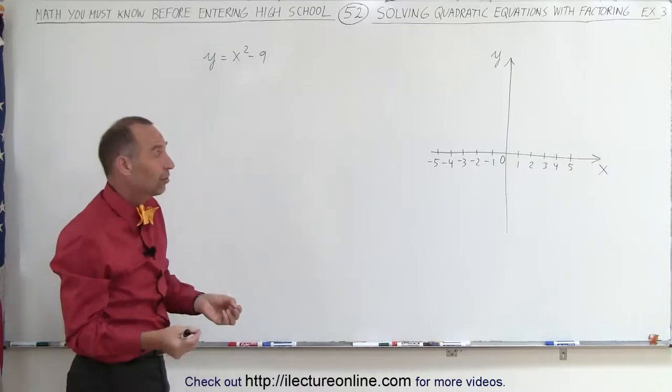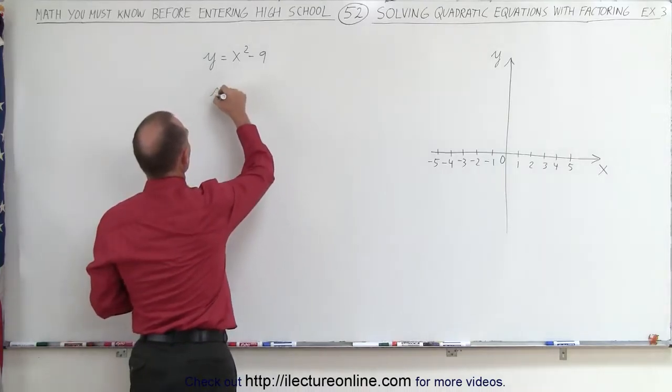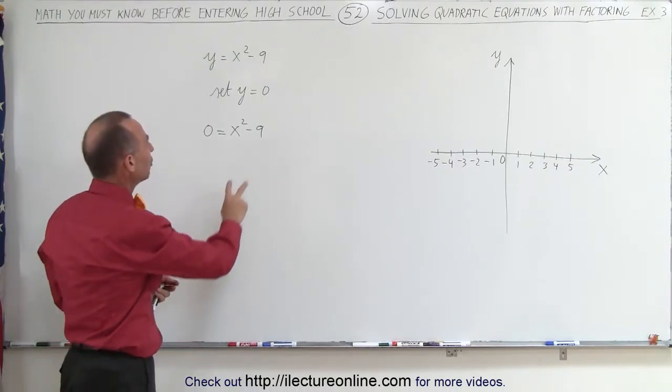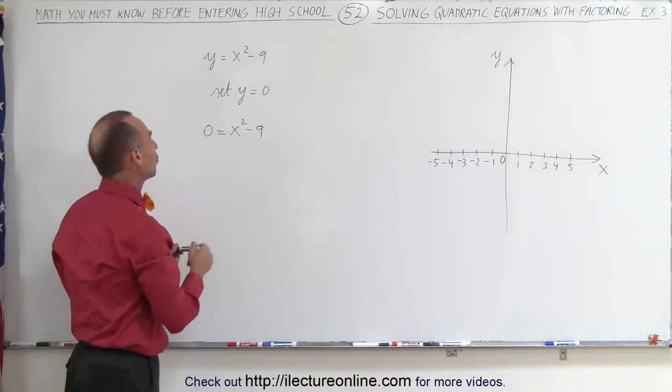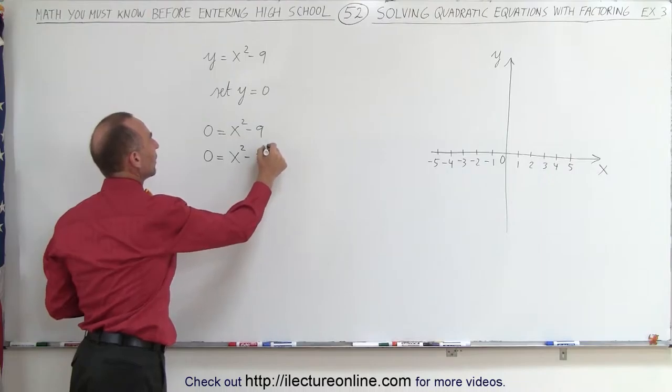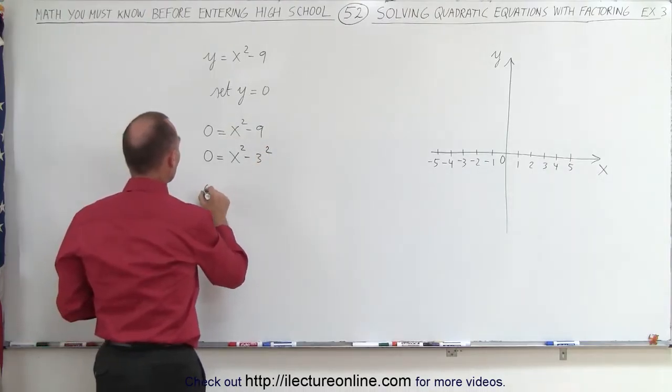So, to find the points where it crosses the x-axis, we need to set y equal to 0. Set y equal to 0, which means that this quadratic equation now becomes 0 equals x squared minus 9, and now we're looking for the values of x that will set the left side equal to the right side that will solve this equation.